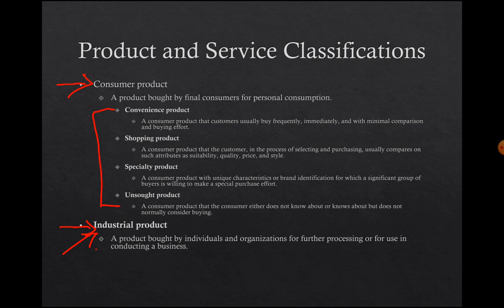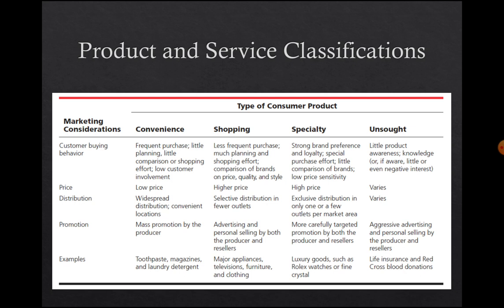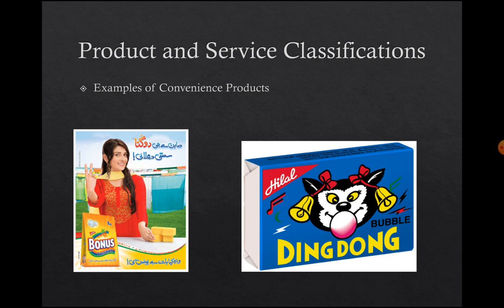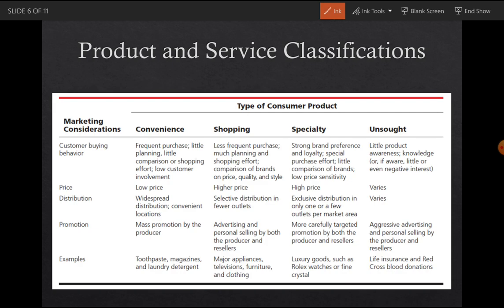This chart gives a better view of consumer products. For the convenience product, customer buying behavior involves frequent purchase, little planning, little comparison of shopping efforts, and low customer involvement. The price is low, distribution is widespread through convenience locations like stores, and promotion targets the mass market. Examples include toothpaste, magazines, and laundry detergents.